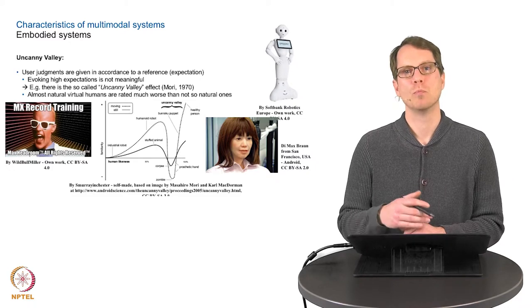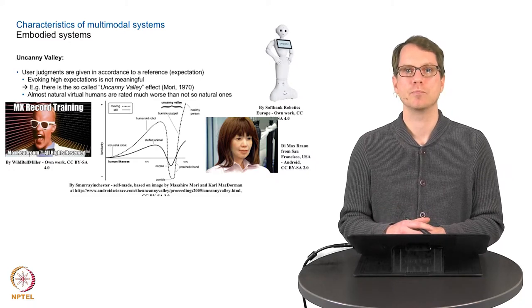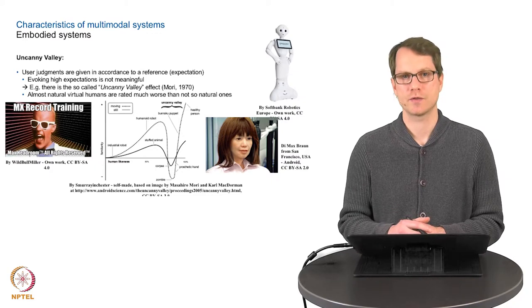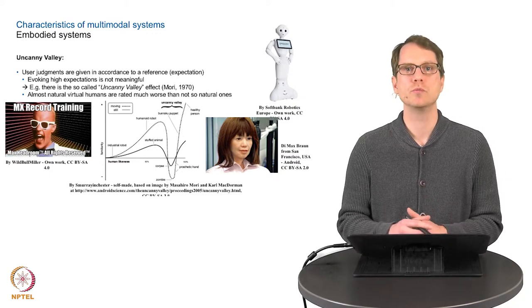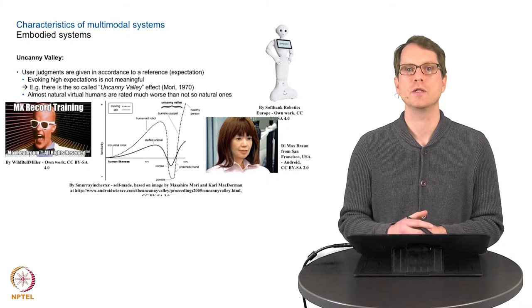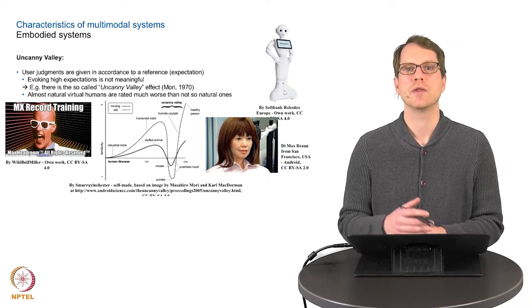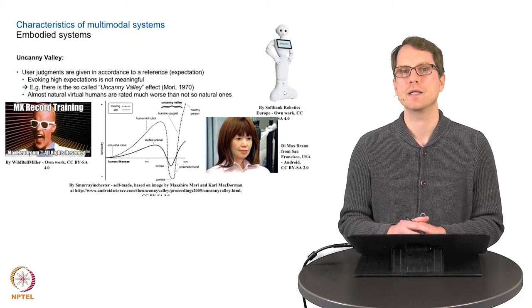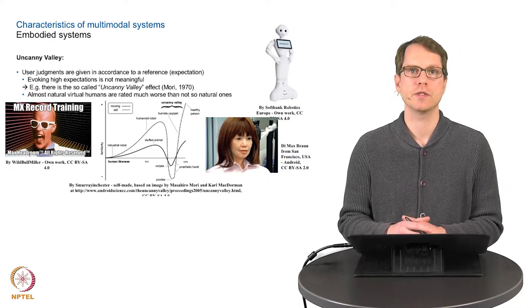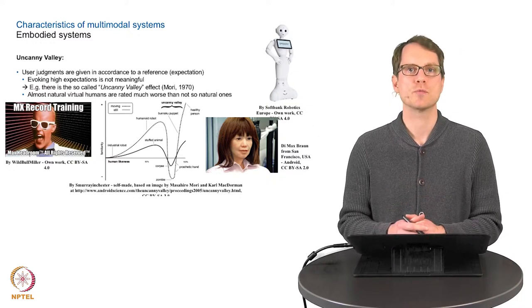If we go more and more human-like in our interface, for example from an industrial robot to a human robot, the familiarity will increase until there is the uncanny valley where suddenly the familiarity or the positive evaluation drops significantly.